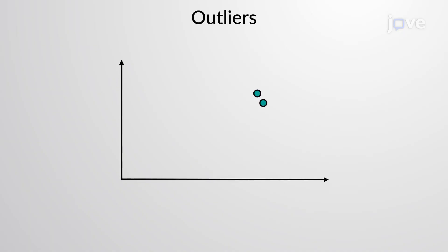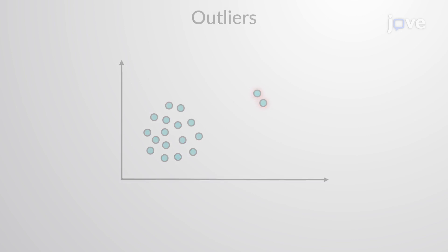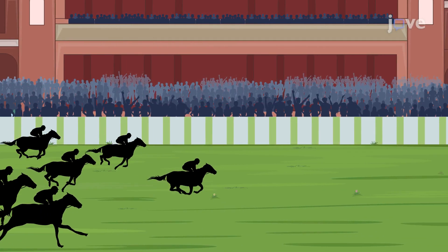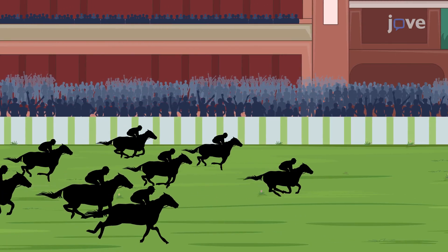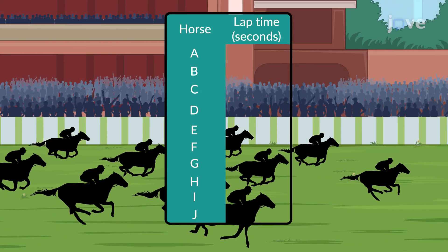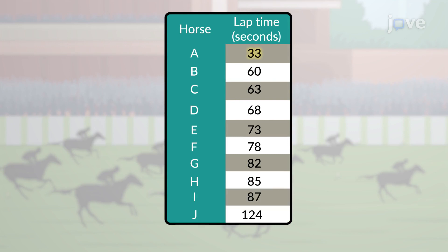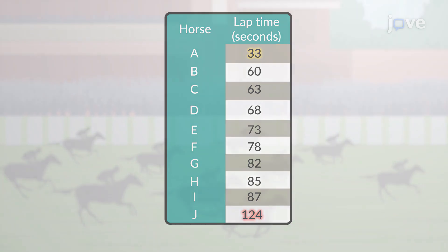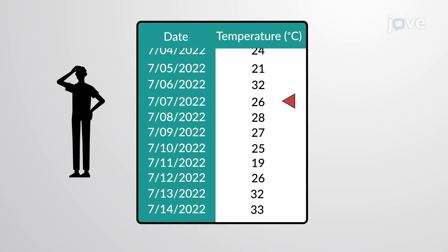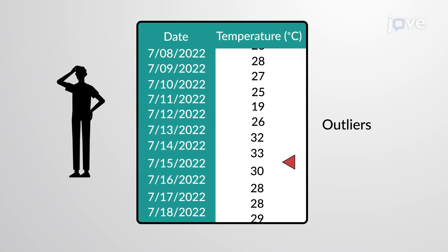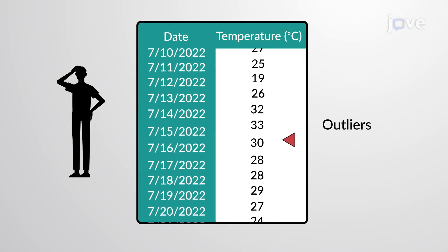Outliers are one or more values in a dataset that stand out from the others. For example, the five best horses are determined by their average lap time. An unusual lap time, either too good or too poor, is considered an outlier. But how can one identify outliers from a large dataset?